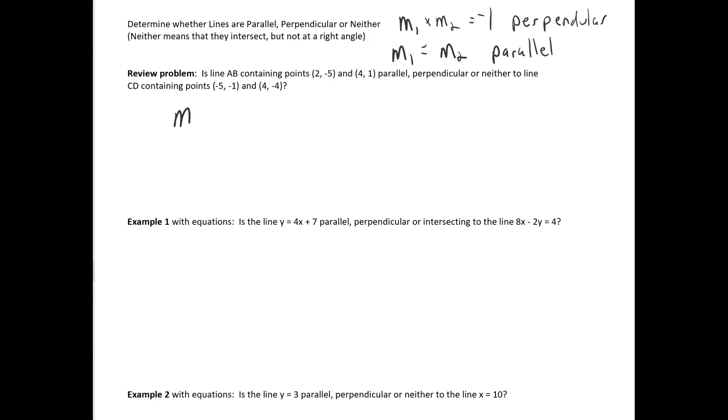So let's find the two slopes. The slope of line AB is the change in Y over the change in X, so 1 minus negative 5 over 4 minus 2, and that is 6 over 2, which is 3. The slope of line CD would be negative 4 minus negative 1 over 4 minus negative 5. This is really negative 4 plus 1, so it's really negative 3, and this is really 4 plus 5, which is 9, so this is negative 1 third.